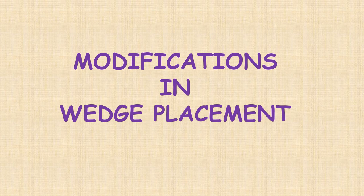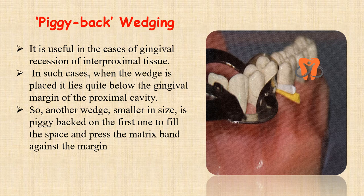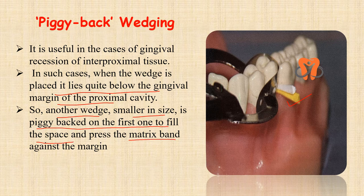Coming to modifications in wedge placement — this is a very important and common viva question. First is piggyback wedging. This method of wedging is very useful in cases of gingival recession of the interproximal tissues. In such cases, when we place the wedge, it lies quite below the gingival margin of the proximal cavity. As you can see in the photograph, the first wedge is lying so much below the gingival margin. So we have to place another wedge, smaller in size, which is piggybacked on the first one to fill the space and press the matrix band against the margin. These two wedges together push the matrix band against the gingival margin of the tooth. This is known as piggyback wedging.